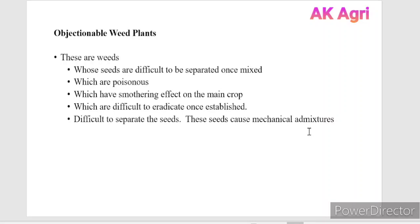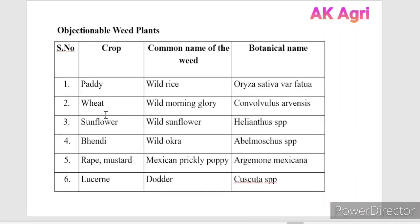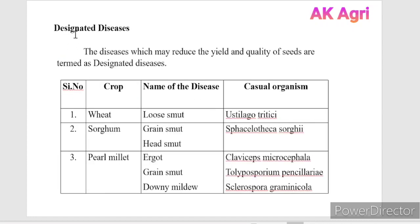For example, in the case of wheat, wild morning glory acts as an objectionable weed plant. Seeds should also be free from designated diseases — diseases which may reduce the yield and quality of the seed. For example, loose smut of wheat is an internally seed-borne disease that acts as a designated disease, reducing the yield and quality of wheat once infected.